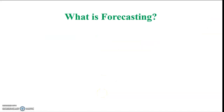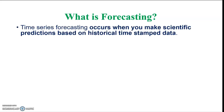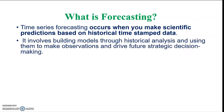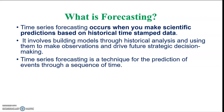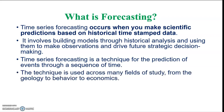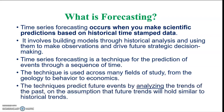Let me start with the definition of forecasting. Time series forecasting happens when we make scientific predictions which are based on historical time-stamped data. It involves building models through historical analysis and using them to make observations and drive future strategic decision making. It is a technique for the prediction of events through a sequence of time, used across many fields from geology to behavior to economics. Time series forecasting predicts future events by analyzing trends of the past, assuming that future trends will hold similar to historical data.